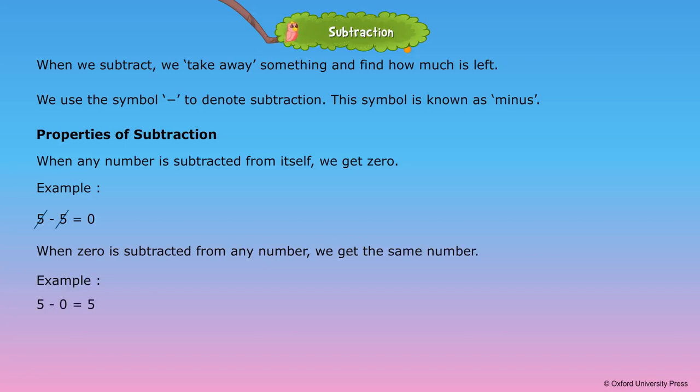When 1 is subtracted from a number, we get the number before it. Example: 5 minus 1 equals 4.